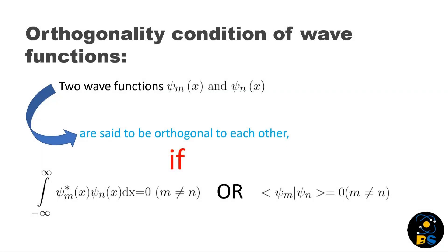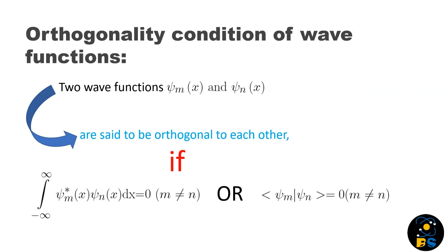First, let's understand the orthogonality condition of wave functions. Two wave functions ψ_m and ψ_n are said to be orthogonal to each other if these conditions are true.